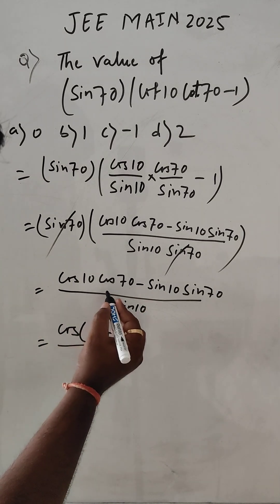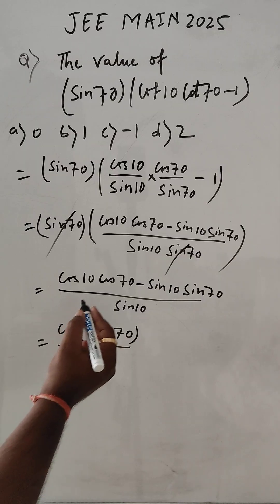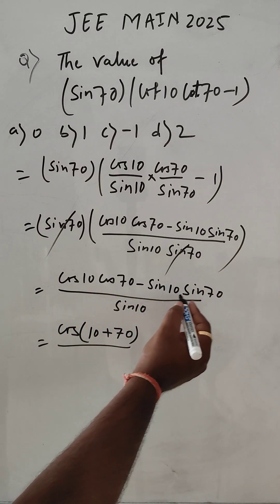Cos A plus B: cos A cos B minus sin A sin B.